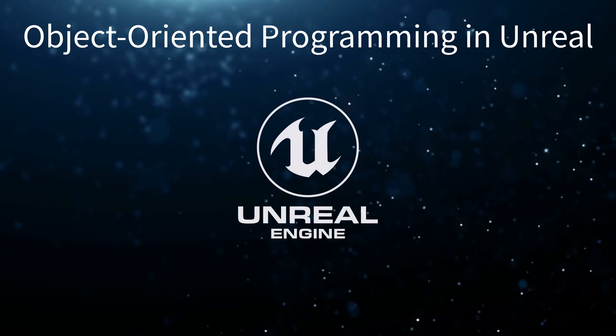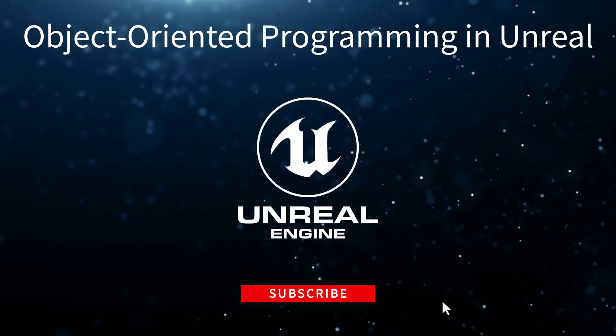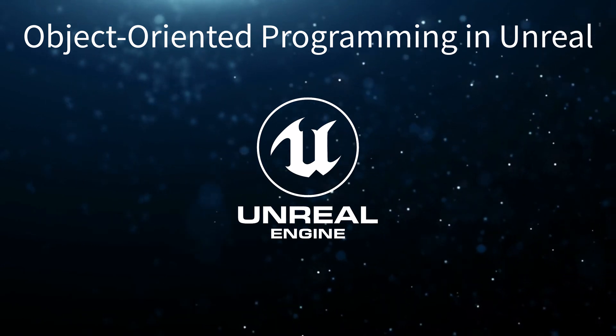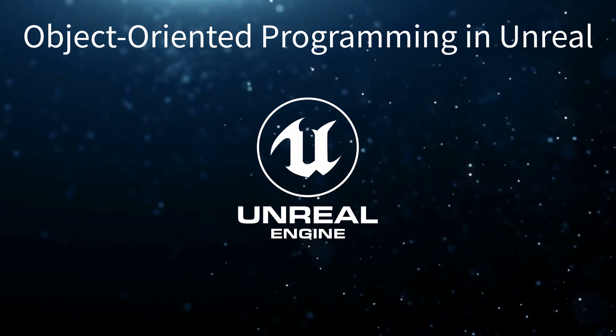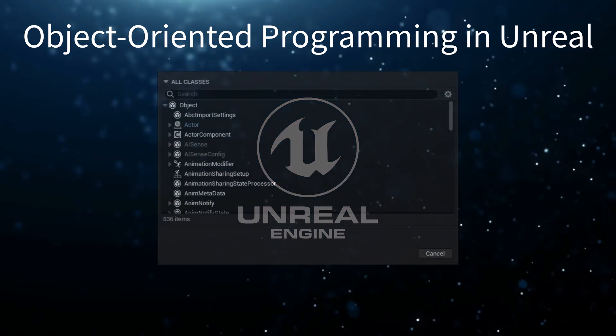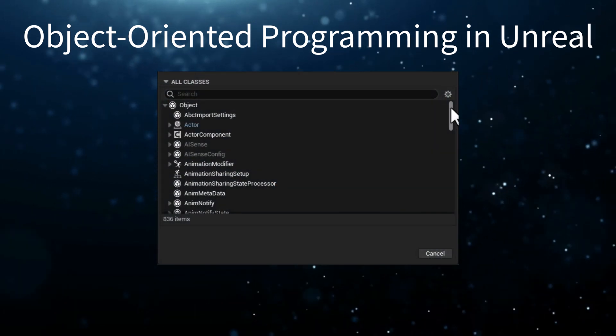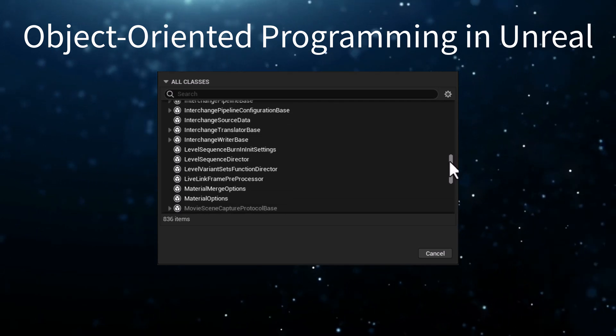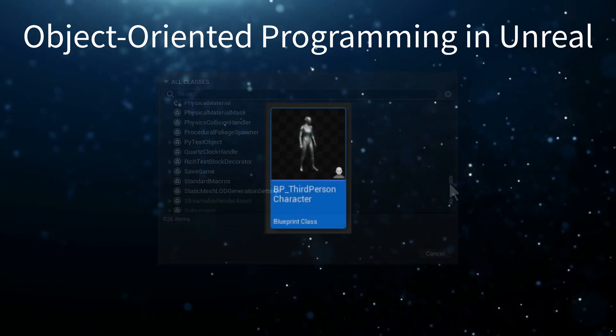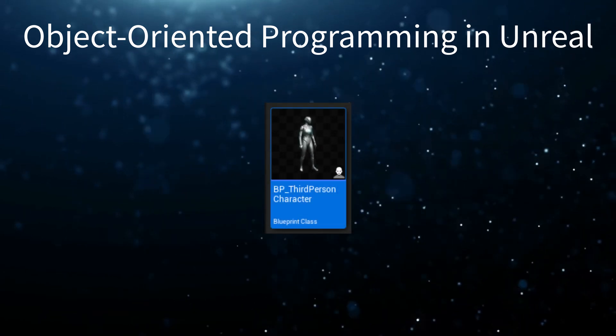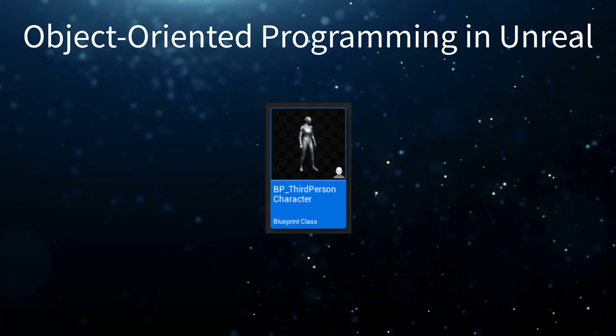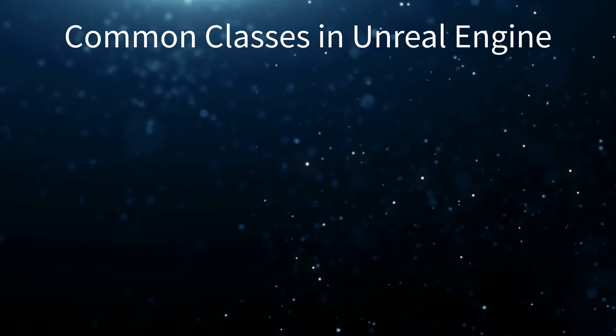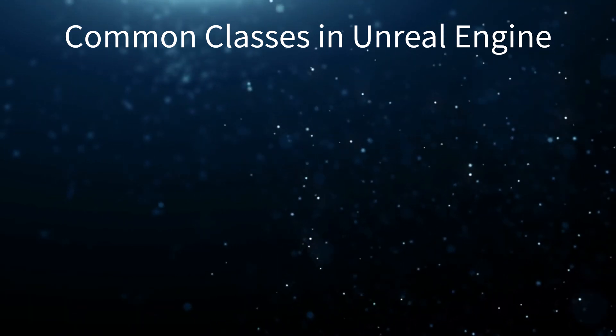Unreal Engine uses the object-oriented programming approach to write its code. So, we will be using this approach when learning to code in Blueprints. Unreal Engine comes with a lot of predefined classes that we can use immediately for a variety of purposes. For example, Unreal has a pre-built class called Character, which comes with many common attributes and functionality that a game character typically needs. Now, let's take a look at some of the common pre-built classes that come with Unreal Engine.